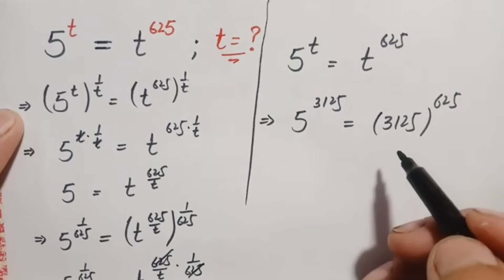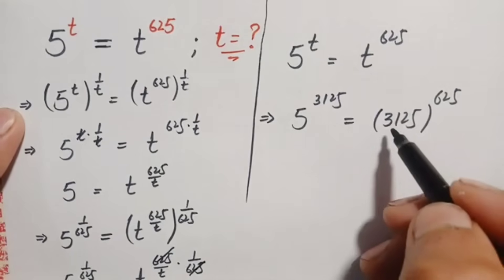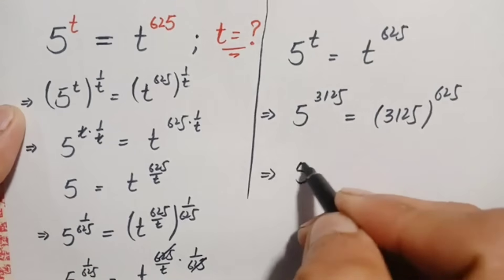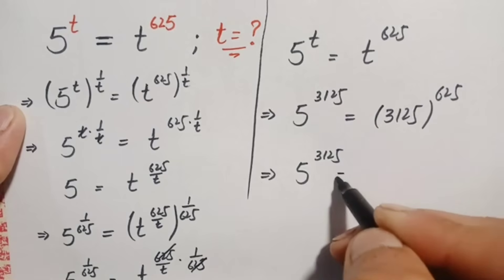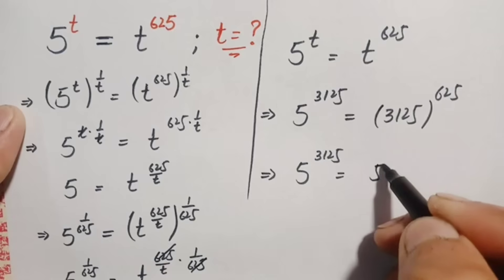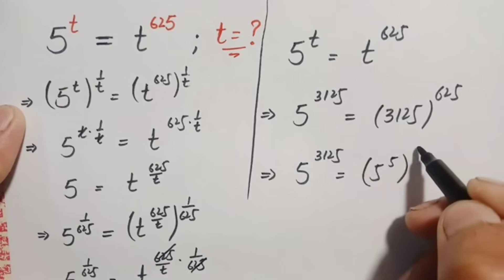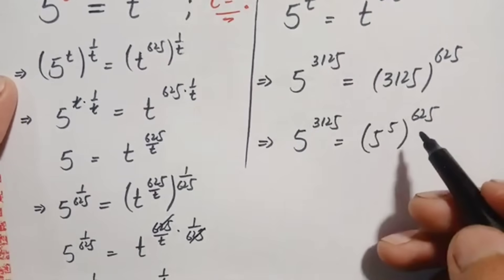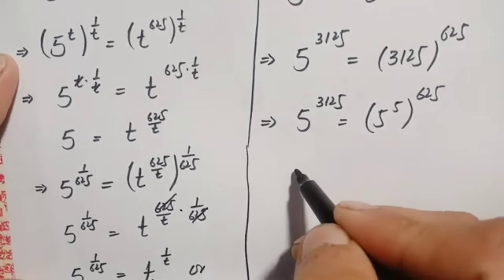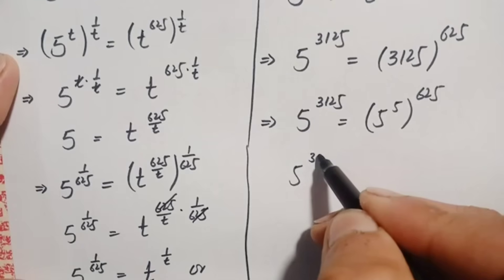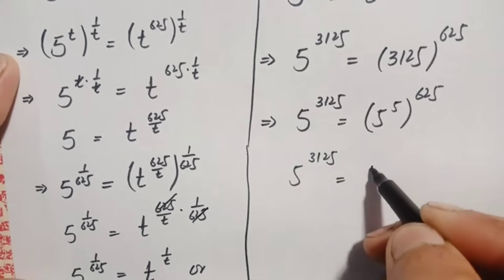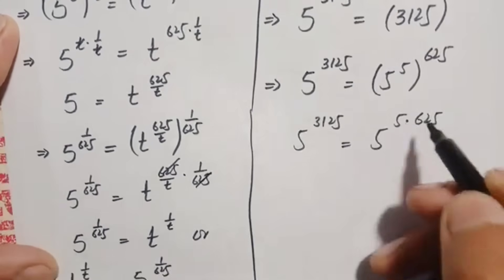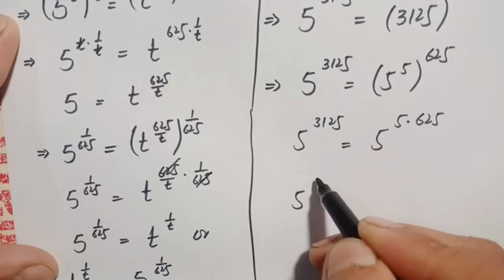So this implies 5 raised to power 3,125 equals 5 raised to power 5, all raised to power 625. On the right-hand side we use the exponential identity and multiply the powers with each other: 5 raised to power 5 times 625. Multiplying 5 times 625 gives 3,125. So the right-hand side becomes 5 raised to power 3,125.